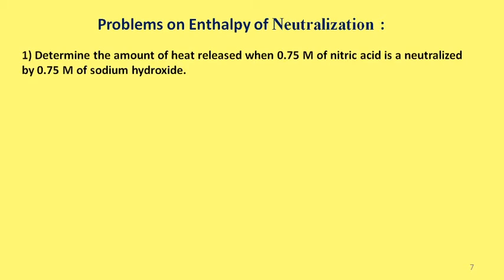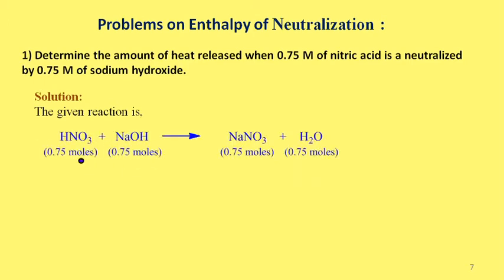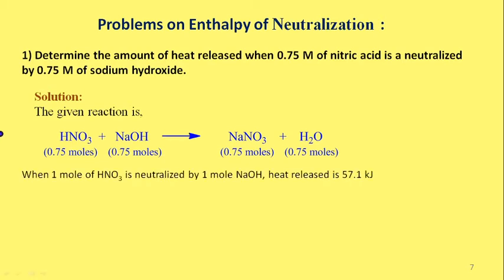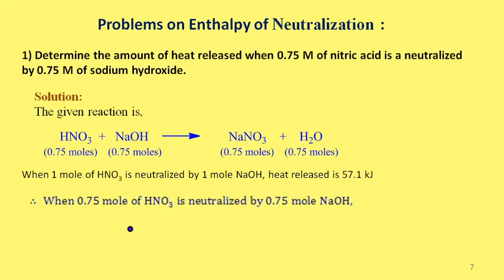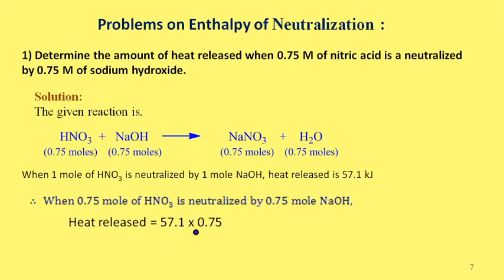Problem 1: Determine the amount of heat released when 0.75 mol of nitric acid is neutralized by 0.75 mol of sodium hydroxide. Both are strong acid and base. As 1 mol of strong acid is neutralized by 1 mol of strong base with heat released of 57.1 kJ, for 0.75 mol: heat released = 57.1 × 0.75 = 42.8 kJ.